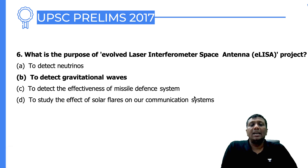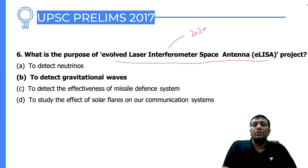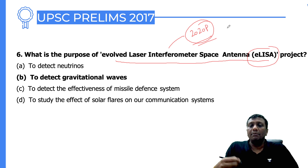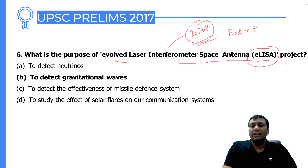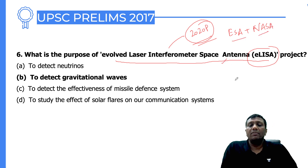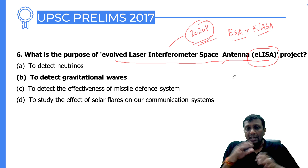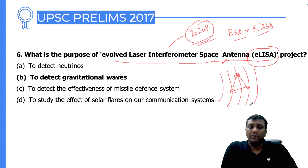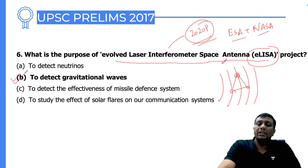Question six asks about the purpose of LISA — the Laser Interferometer Space Antenna. This question also appeared in the 2020 prelims. LISA involves a group of three satellites planned by the European Space Agency and NASA. Three spacecraft will be placed in space at millions of kilometers apart in a triangular arrangement. Through this setup, scientists will try to detect gravitational waves in space.